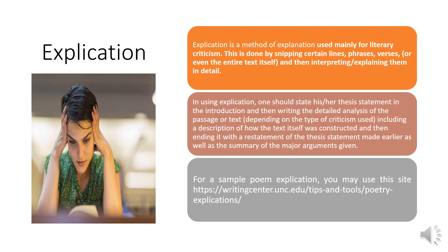The second way of explaining a concept is explication. It is a method of explanation used mainly for literary criticism. This is done by selecting certain lines, phrases, verses, or even the entire text itself, and then interpreting or explaining them in detail. Also, in using explication, one should state their thesis statement in the introduction, then write the detailed analysis of the passage or text, depending on the type of criticism being used, including a description of how the text was constructed, and then ending with a restatement of the thesis statement and a summary of the major arguments. If you want to see an example of an explication, you may use the link below.